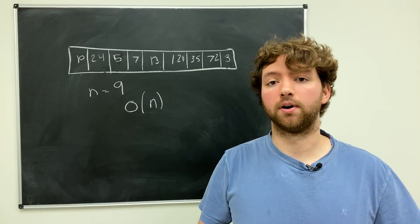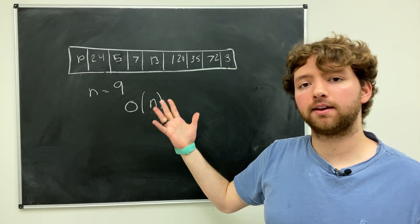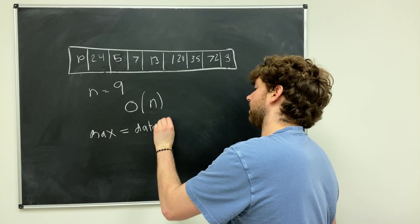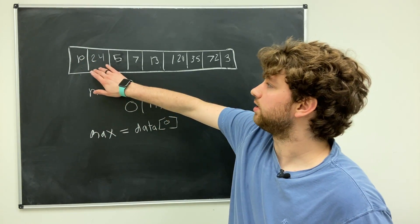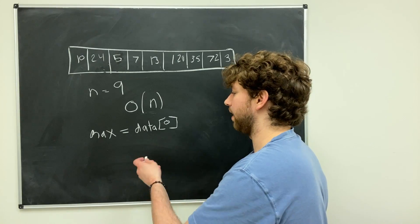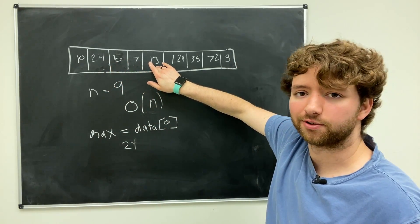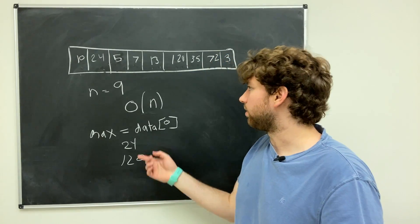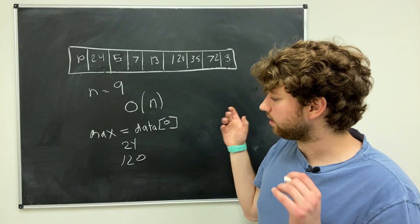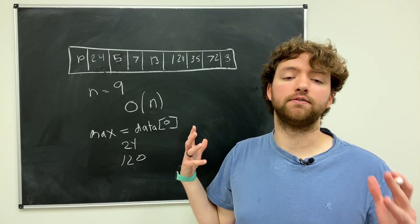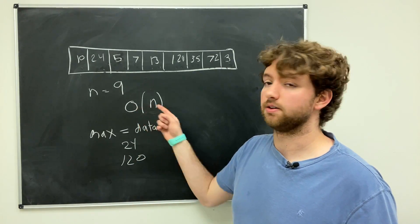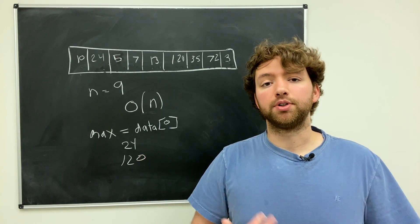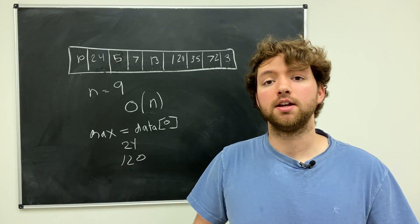Another O(n) example: finding the maximum number. You keep track of the highest number as you iterate. You start with max as the first element — so max is 10. Then each element is compared: is 24 larger? Yes, so the new max is 24. Is 5 larger? No. Is 7 larger? No. Is 13 larger? No. Is 120 larger? Yes, so it replaces the max. And so on through 35, 72, 3. It has to go through every single element and do a comparison. That is how you find the maximum in a dataset, and this algorithm is O(n). You can think of O(n) as the standard — it iterates through the entire collection to find what you're looking for.